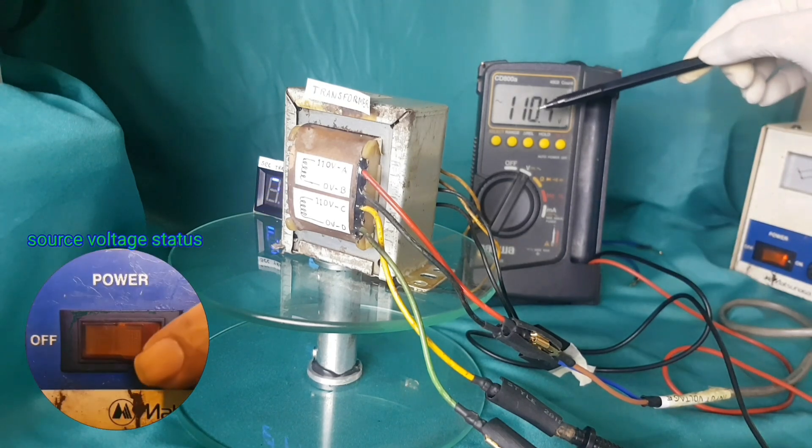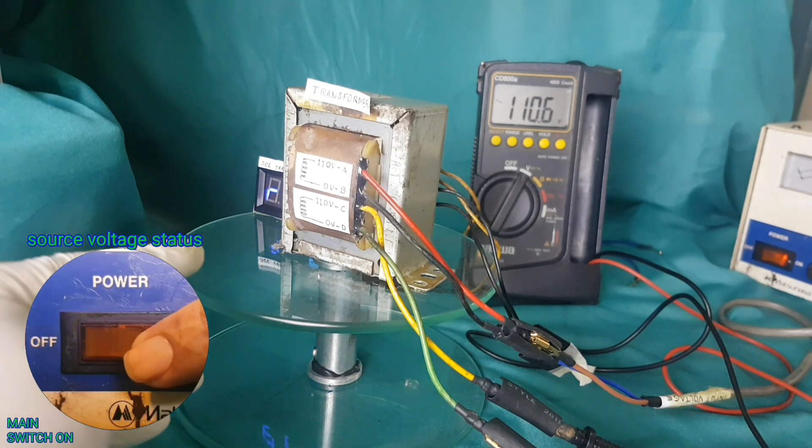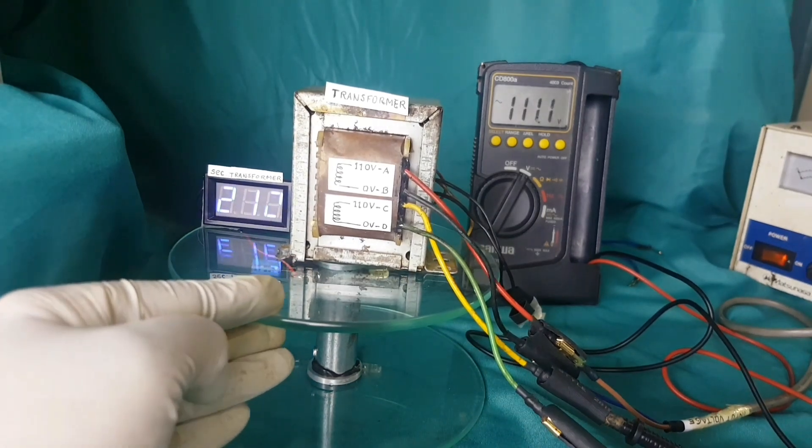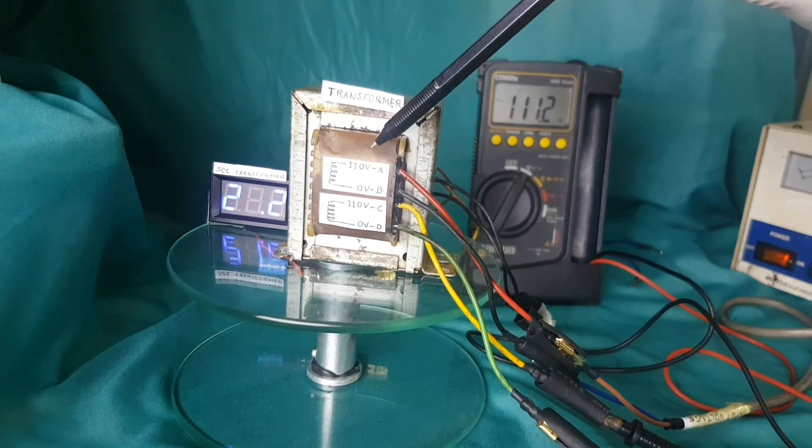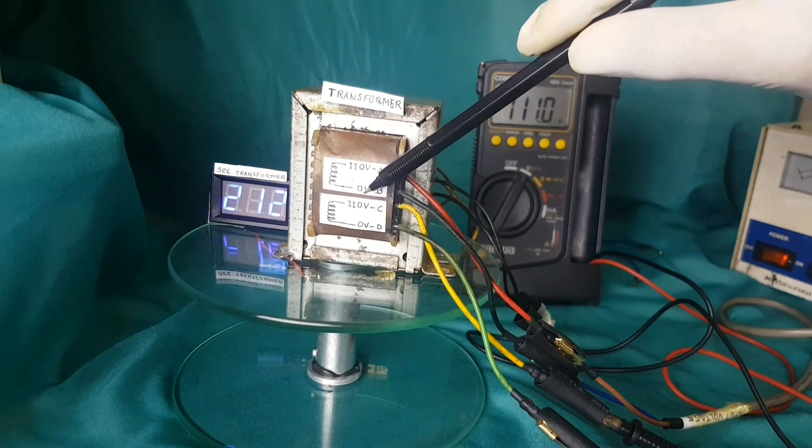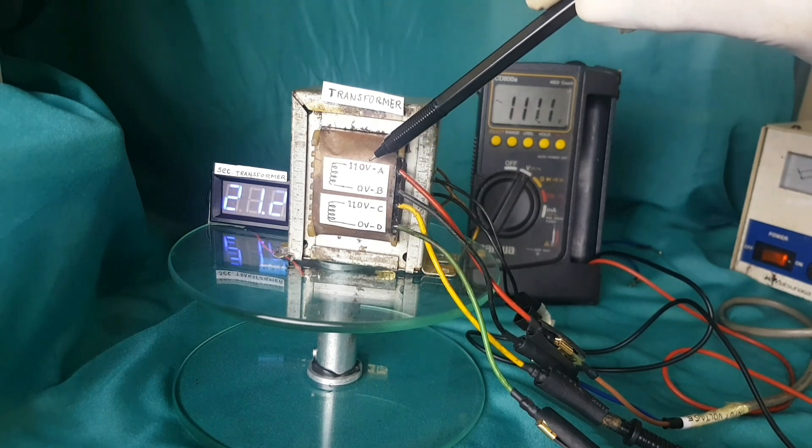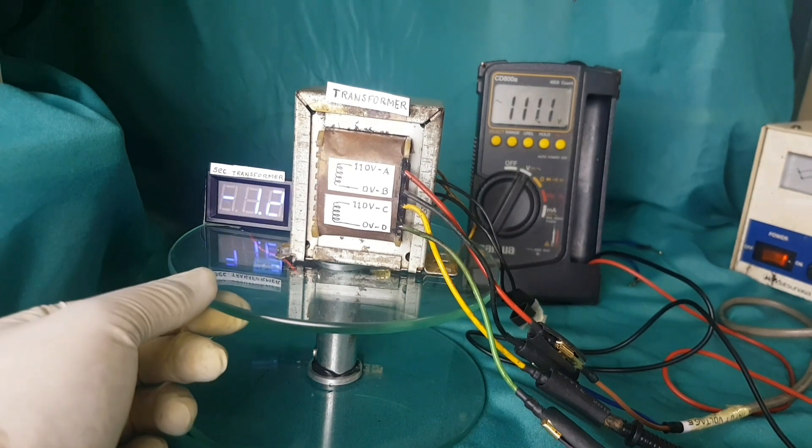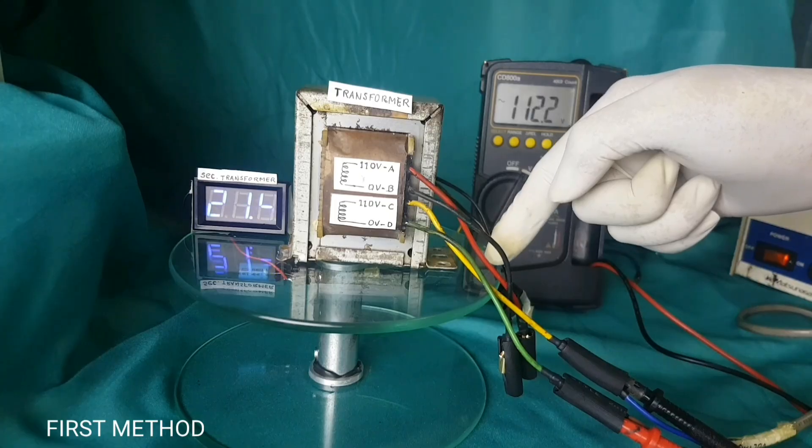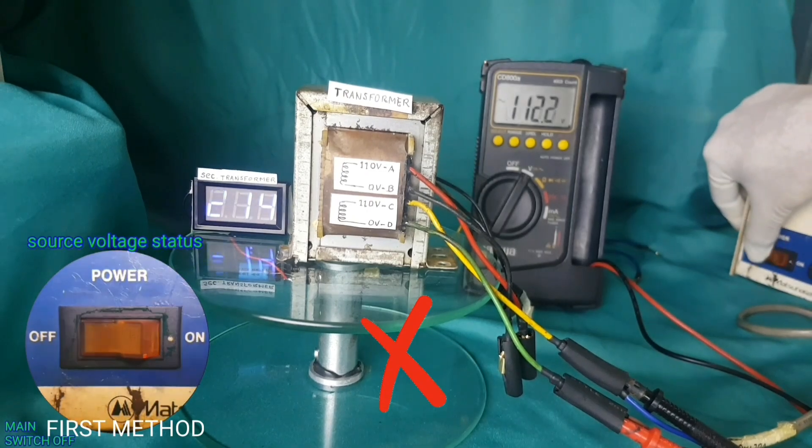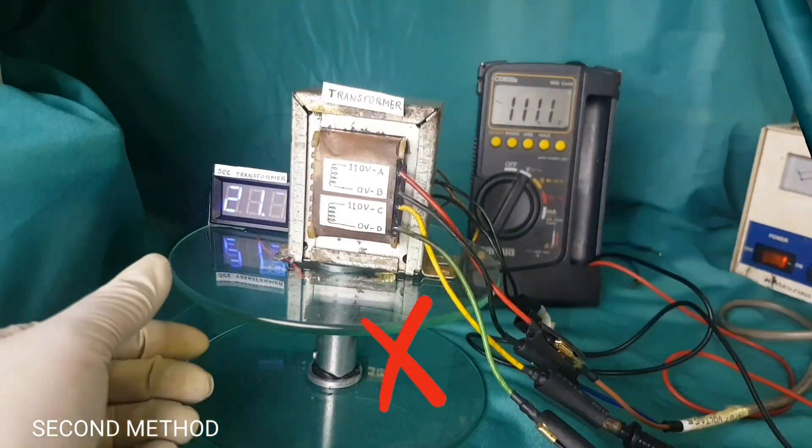Insert the plug into the 100V stabilizer socket and turn on the main switch. The DC voltage on the secondary side of the transformer is 21.2V. This is the same as before. Neither the first nor the second method is good.